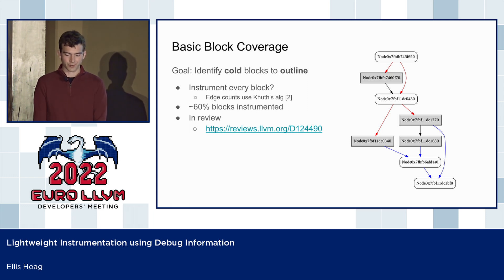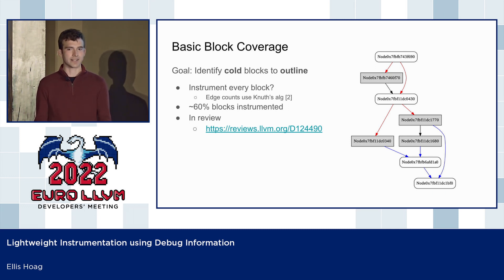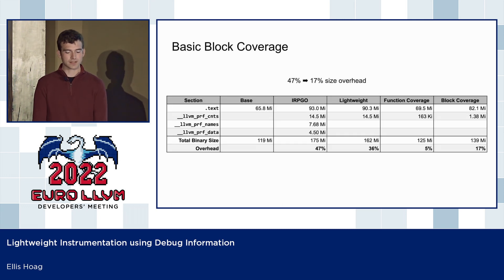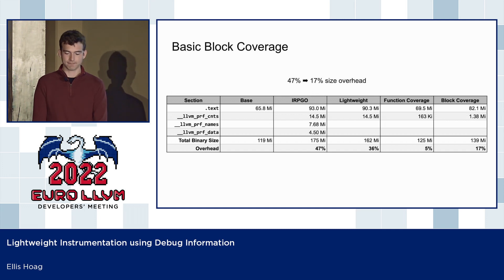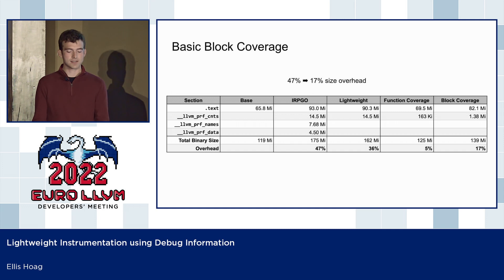We have a diff that is almost ready for review that adds basic block coverage to LLVM. Everything discussed prior to this is already in LLVM, but basic block coverage is recent work not yet published. Building the Clang binary shows that basic block coverage has less than 20% binary size overhead. To summarize our progress: lightweight instrumentation eliminates the extra sections and reduces binary size with no loss of profile data; function entry coverage achieves extremely small size overhead; and basic block coverage provides similar profiles to edge count profiles but is much more lightweight in both size and performance.